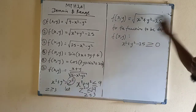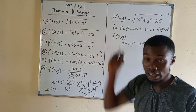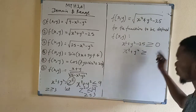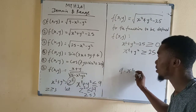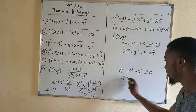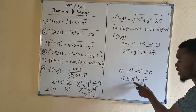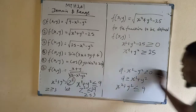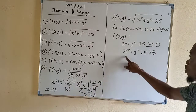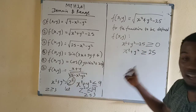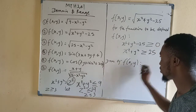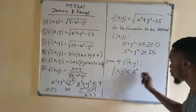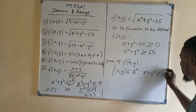So we have that x squared plus y squared is greater than or equal to 25. Compare this to question 1: there we got x squared plus y squared ≤ 9; here we get x squared plus y squared ≥ 25. The domain of f is: {(x,y) ∈ ℝ² such that x squared plus y squared is greater than or equal to 25}.